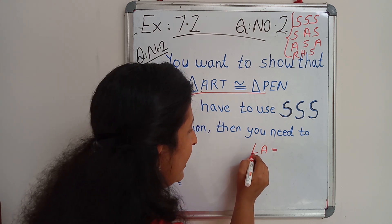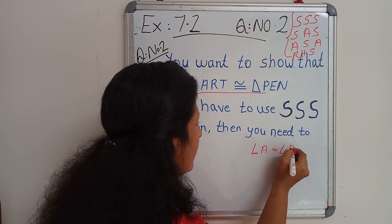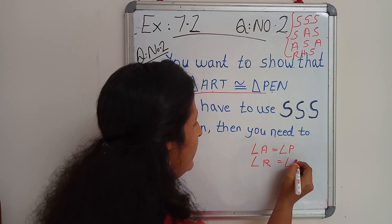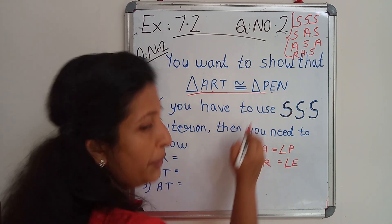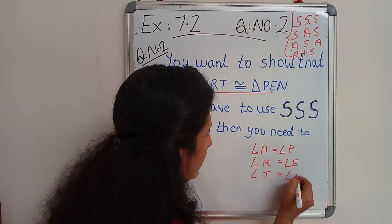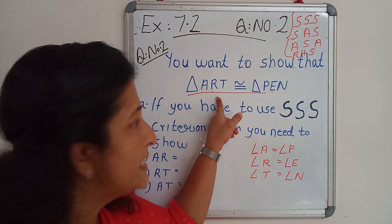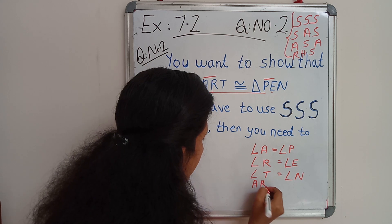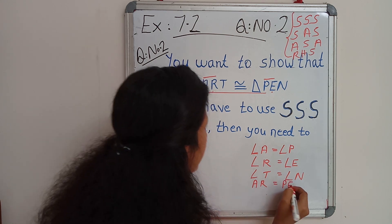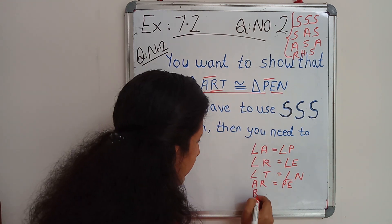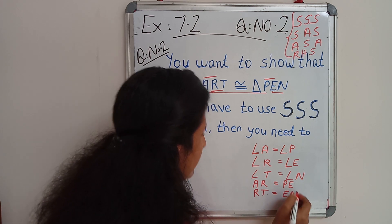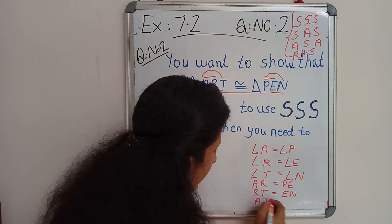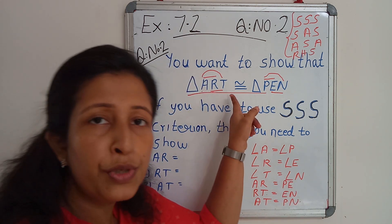What are the corresponding angles? Angle A equal to angle P. Angle R equal to angle E. Angle T equal to angle N. What are the corresponding sides? AR equal to PE. RT equal to EN. AT equal to PN.